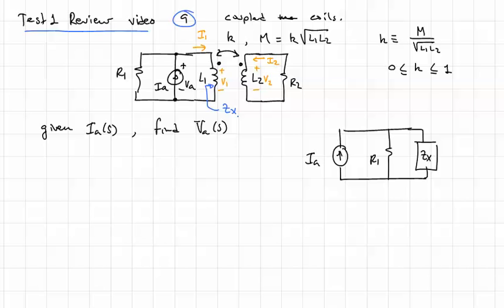So perhaps instead of trying to find VA directly or immediately with R1, let's just find what Zx is initially. Which really Zx, here we'll write Zx is going to be equal to, well, the voltage across Zx is V1 of S, and the current flowing into Zx is I1 of S.